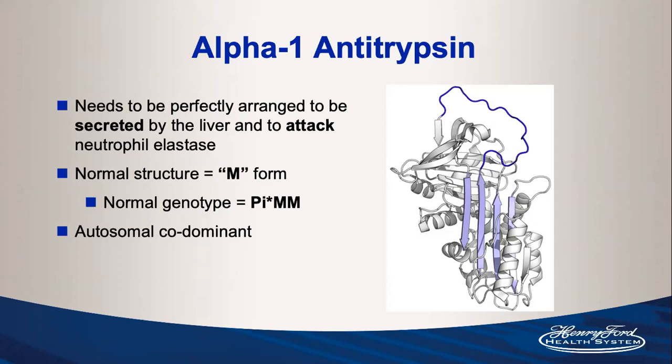This protein is inherited in an autosomal codominant fashion. In general, as long as a patient has at least one normal or M allele they're fairly well protected, so it almost behaves as autosomal recessive disease where they need to inherit two abnormal genes to have issues.